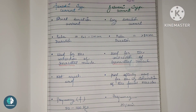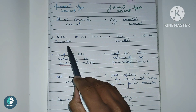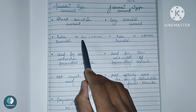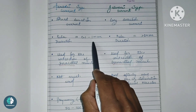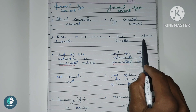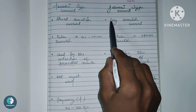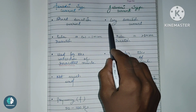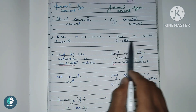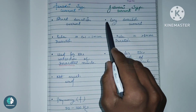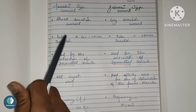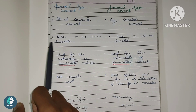The next difference is the pulse duration. Because the faradic type current is a short duration current, its pulse duration ranges from 0.1 to 1 milliseconds. The galvanic type current has a pulse duration of more than 1 millisecond, because it is a long duration current.